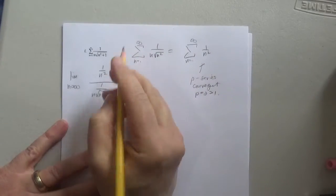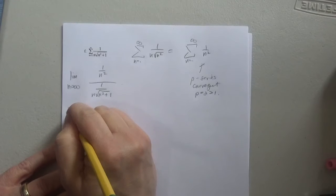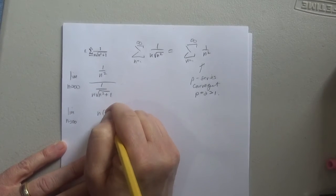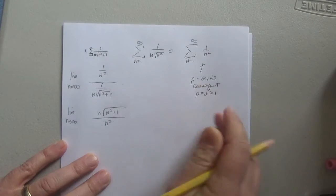So I'm going to flip and multiply. So this guy is just going to become the numerator. The limit as n goes to infinity of n, n squared plus 1. Sorry, that's a radical. n squared.